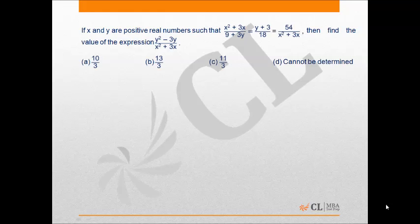This would be a level 2 question. If x and y are positive real numbers such that x square plus 3x upon 9 plus 3y is equal to y plus 3 upon 18 equal to 54 upon x square plus 3x, then find the value of the expression y squared minus 3y upon x square plus 3x.